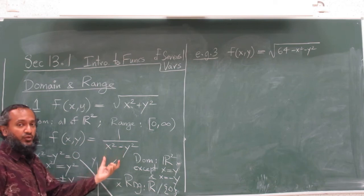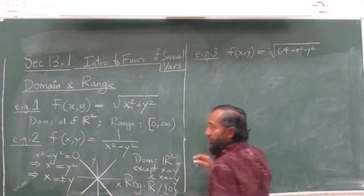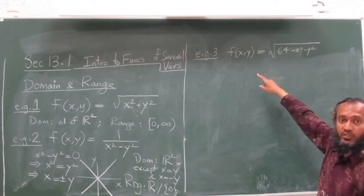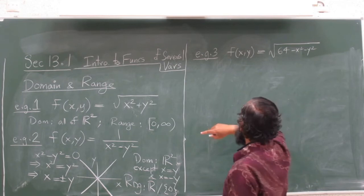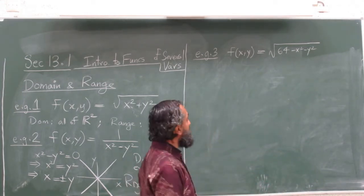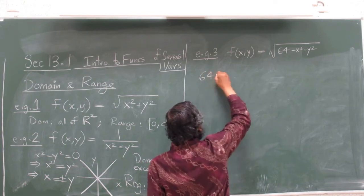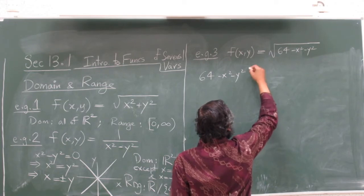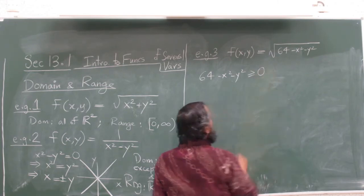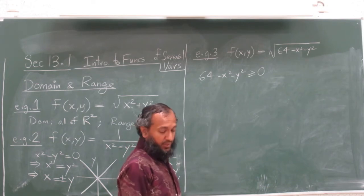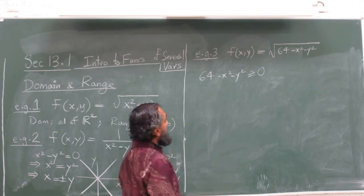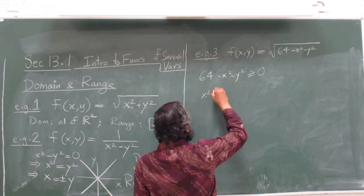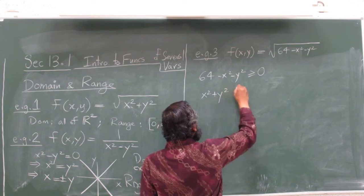Let's do one more example: f of xy equals square root of 64 minus x squared minus y squared. The square root does not accept a negative input, so we need to find where 64 minus x squared minus y squared is greater than or equal to zero, which gives us x squared plus y squared less than or equal to 64.